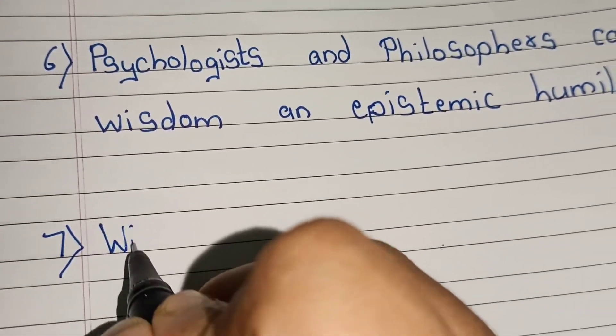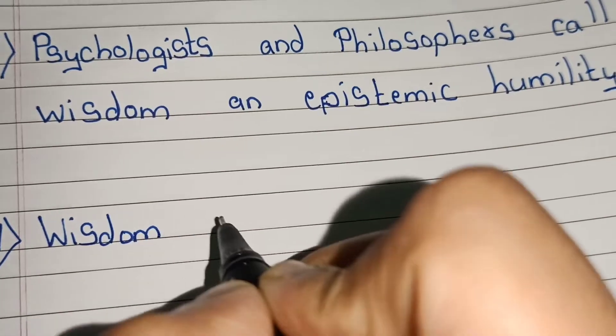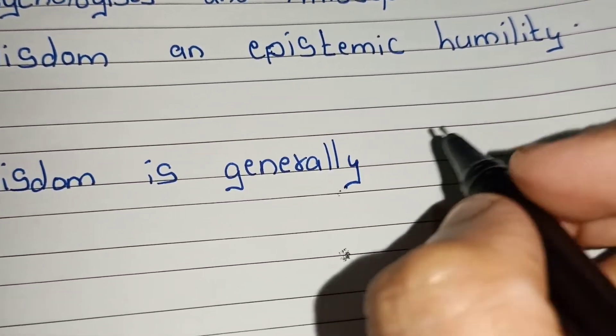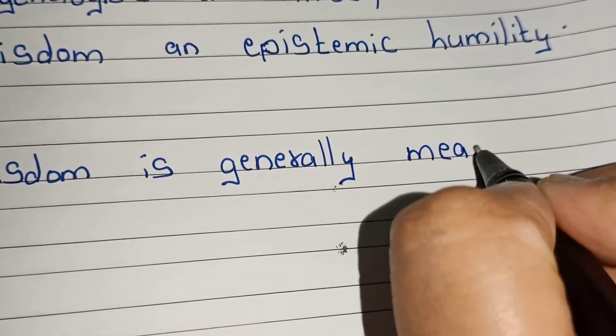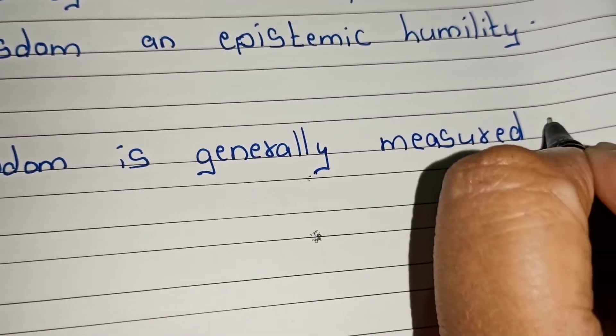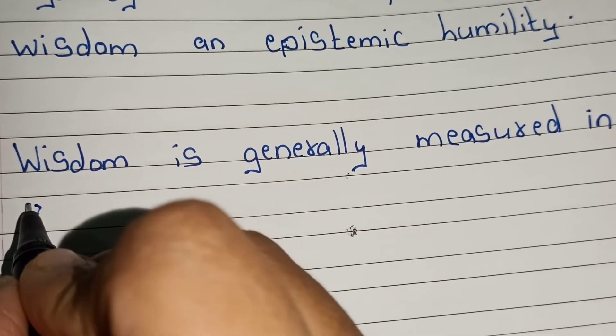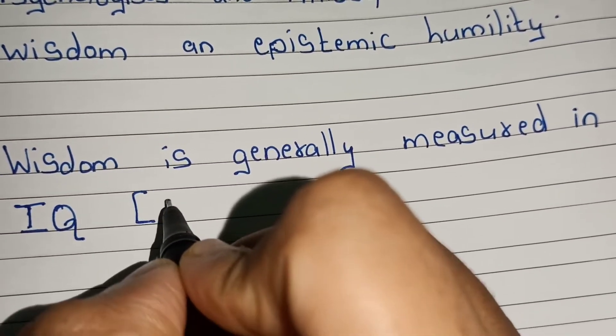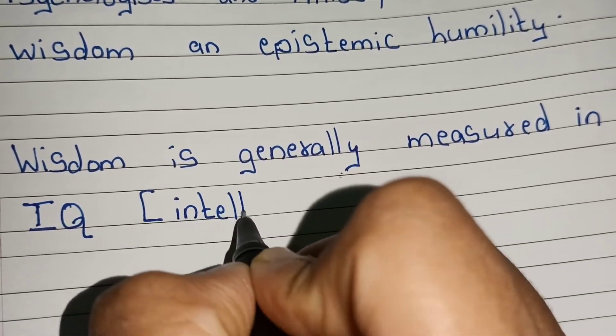Point number seven, wisdom is generally measured in IQ. Full form of IQ in bracket, it is intelligence quotient.